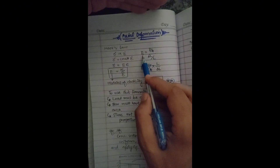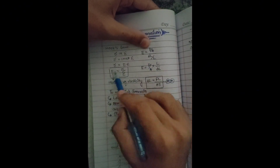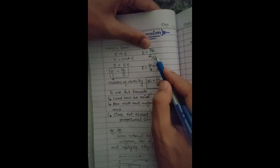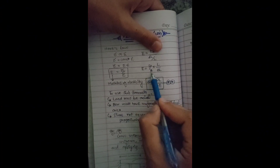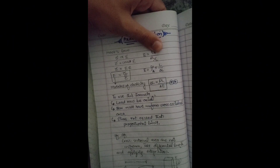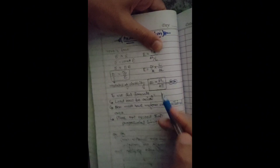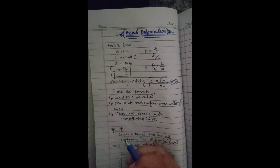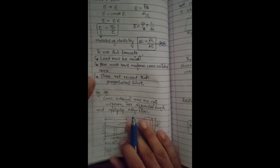The elastic modulus is equal to stress divided by strain. Rearranging, the change in length (deformation) is equal to PL divided by AE, where P is the axial load, L is the length, A is the cross-sectional area, and E is the elastic modulus. To use this formula, the load must be axial, the bar must have a uniform cross-sectional area, and the stress must not exceed the proportional limit. If the cross-sectional area is not uniform, we use a differential length and integration.